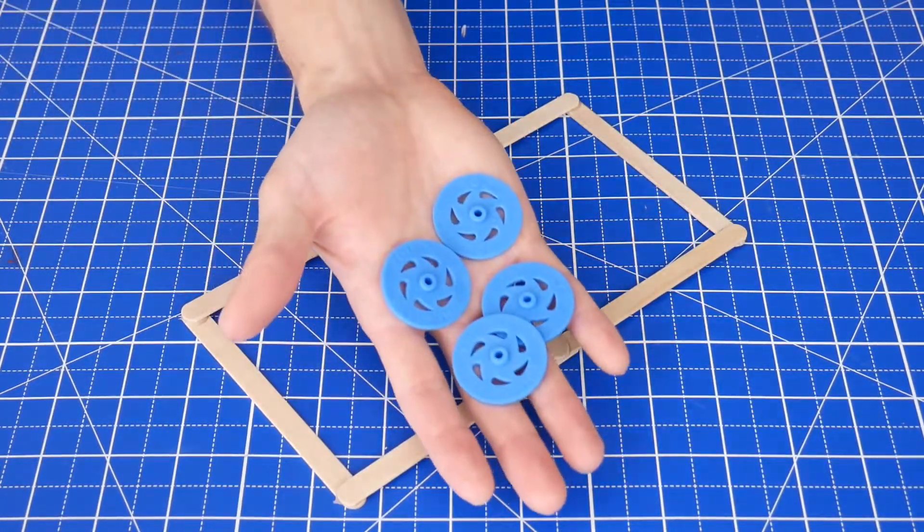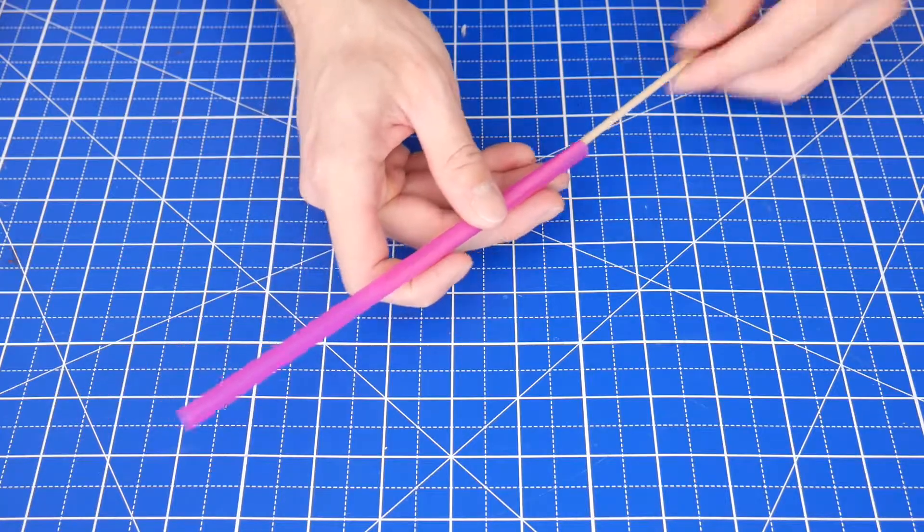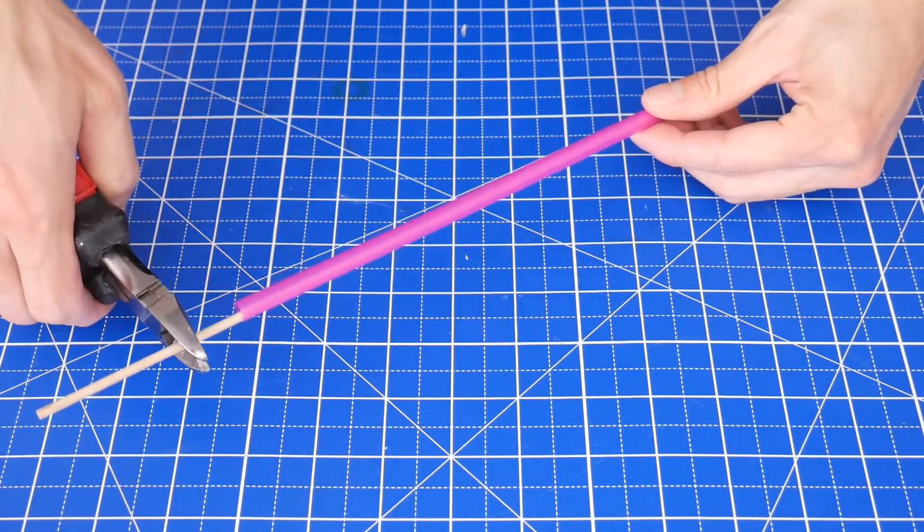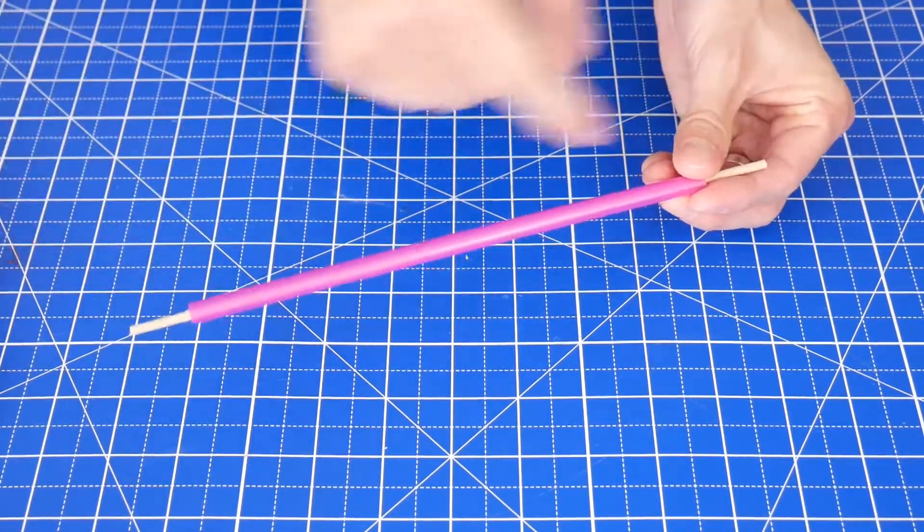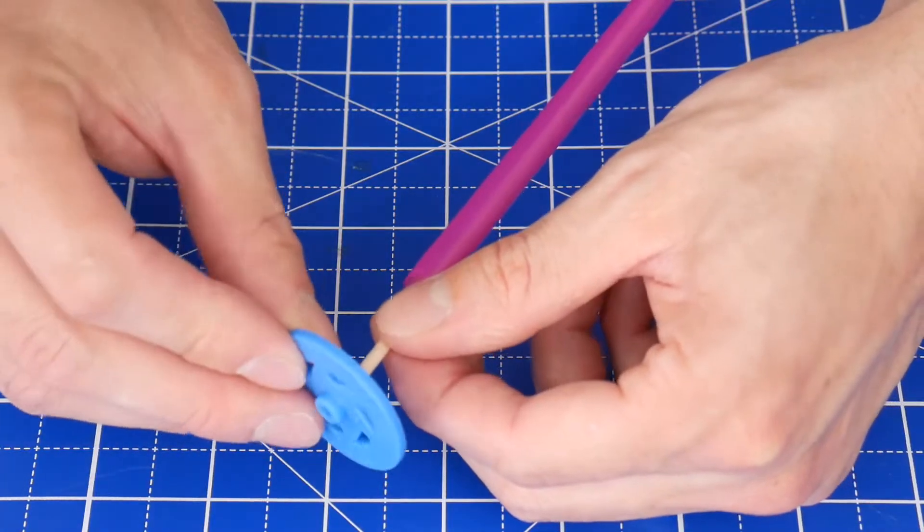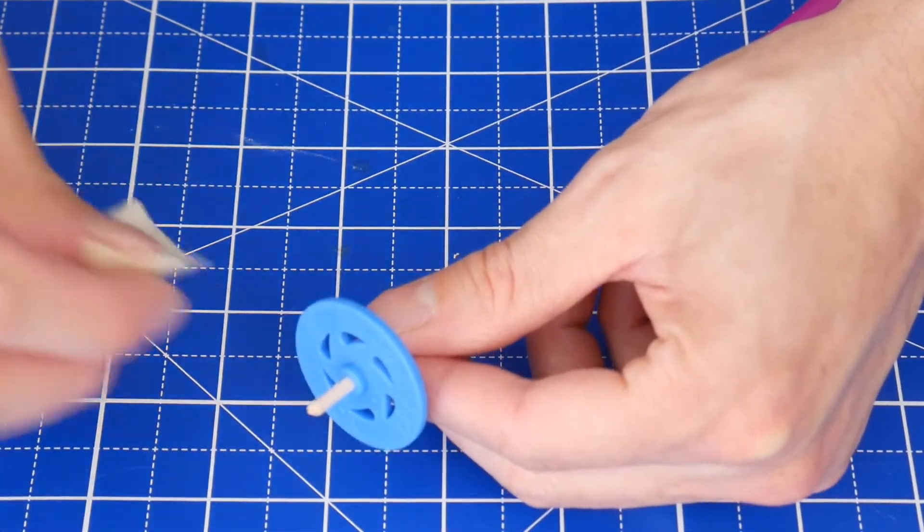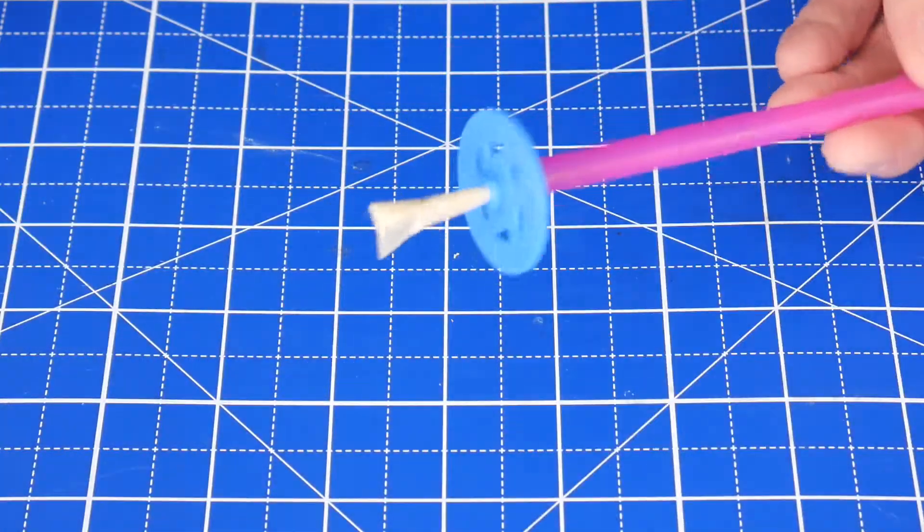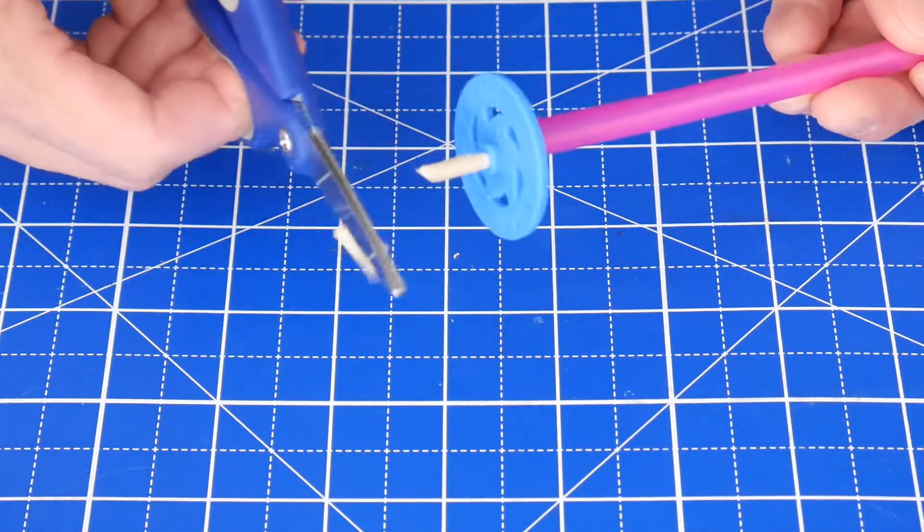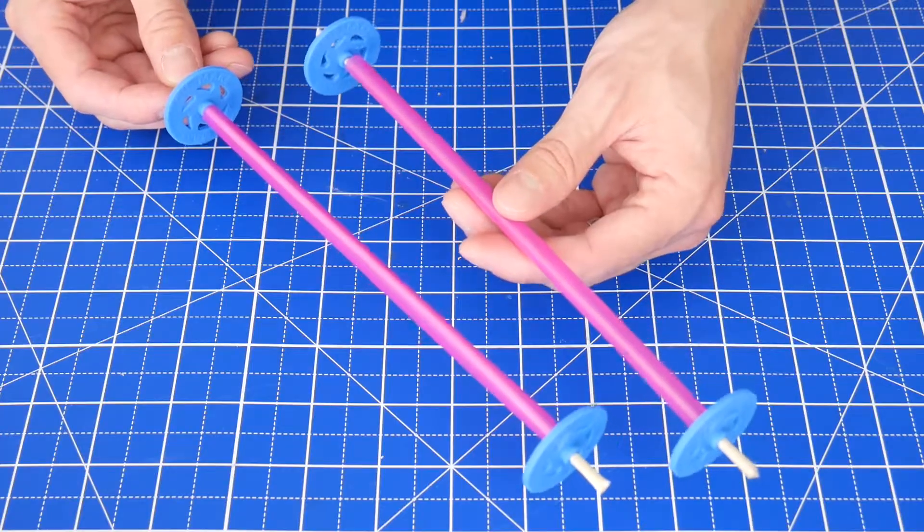Next are the wheels. Put a dowel through the straw and then cut off some of the dowels so that there's about one inch poking out from each side of the straw. Fit a wheel onto the end of the dowel and then wrap a small piece of tape around the dowel to stop the wheel from falling off. Repeat on the other side and then trim off any extra tape. Then create a second set of wheels.